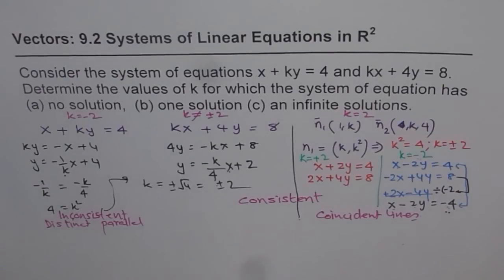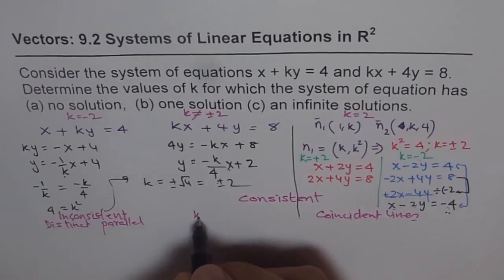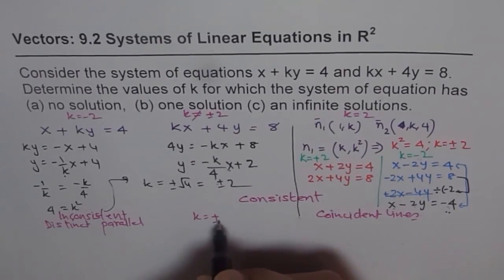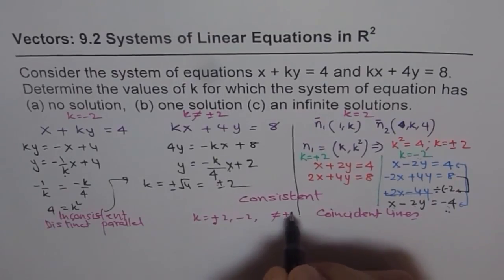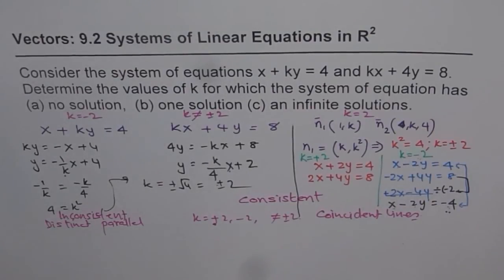We have linear system with one solution, with no solution, and linear system with infinite solution, for the value of k which could be plus 2, minus 2, or not equal to plus minus 2, giving us these varieties of answers.